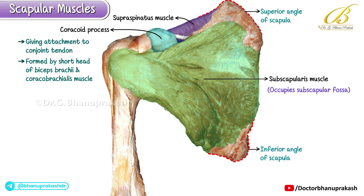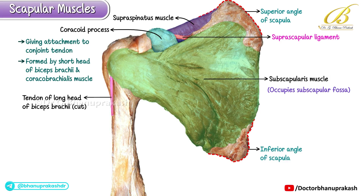The coracoid process gives attachment to the conjoint tendon, which is formed by the short head of the biceps brachii and the coracobrachialis muscle. Adjacent to the coracoid process, you can identify the suprascapular ligament. Between the greater and lesser tubercles of the humerus, the tendon of the long head of the biceps brachii is visible, with its cut ends shown in this view.